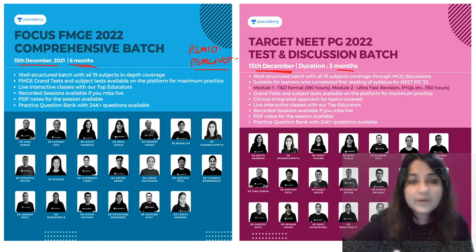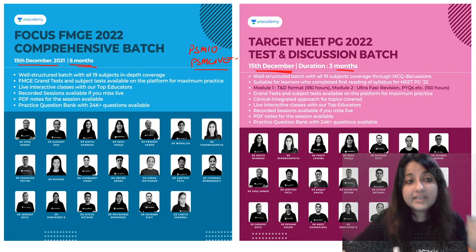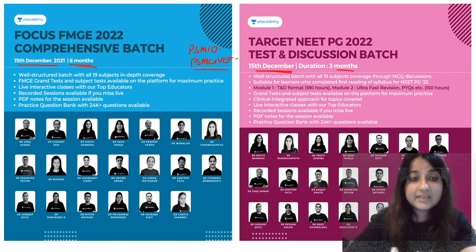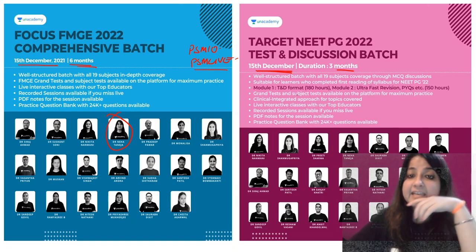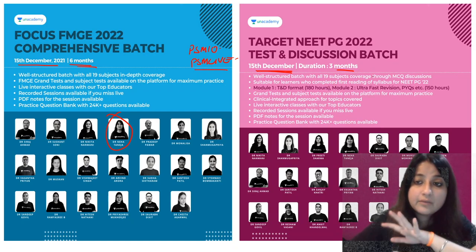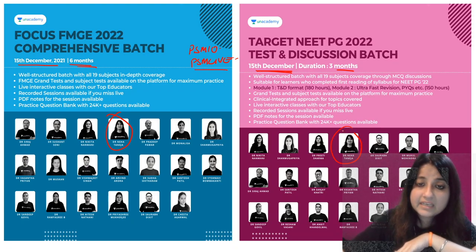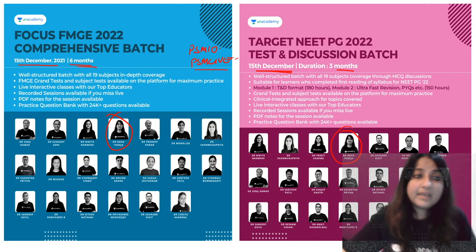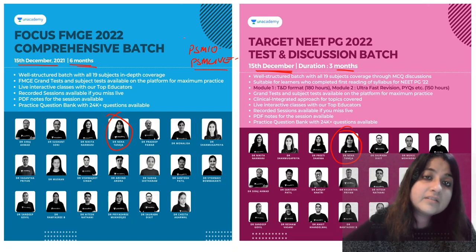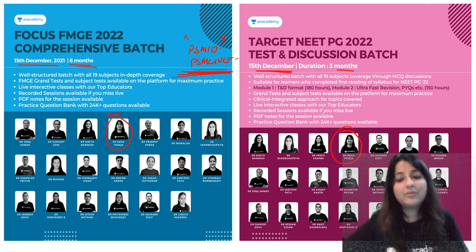You can enroll in the Focus FMG batch which has started on the academy. For those preparing for next year's FMG exams, the PSM TND batch has just started — three months duration, 180 hours, ultra-fast revision with images, MCQs, and PYQs, in live interactive sessions with daily grand tests. Use code PSM10 or PSM LIVE to enroll on the academy. Thank you so much.